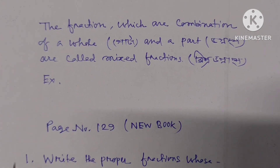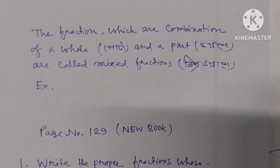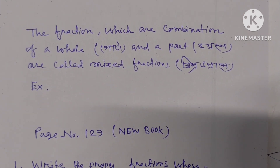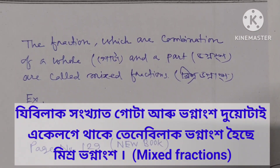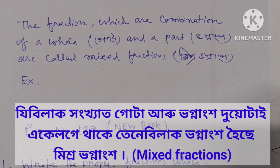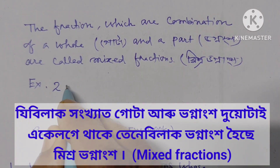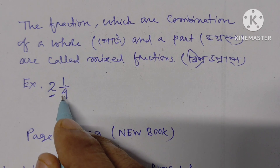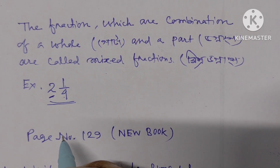Now let us know about mixed fractions. The fractions which are a combination of a whole number and a part are called mixed fractions. For example, 2 and one by four - a whole number and a fraction together. This is a mixed fraction.